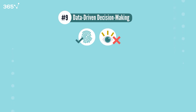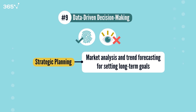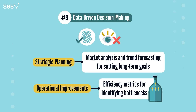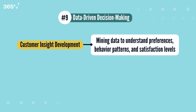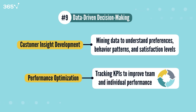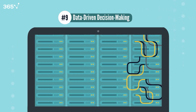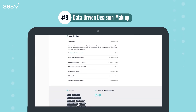Concept 9: Data-Driven Decision Making. Data-driven decision making transforms organizations by using concrete evidence rather than intuition. Common applications include strategic planning (using market analysis and trend forecasting to set long-term goals), operational improvements (using process efficiency metrics to identify bottlenecks), customer insight development (mining customer data to understand preferences, behavior patterns, and satisfaction levels), and performance optimization (tracking KPIs and metrics to continuously improve performance). With a huge wealth of data available today, we can make businesses more efficient than ever. Check out our Data-Driven Business course to learn more.